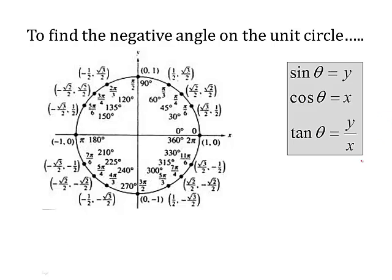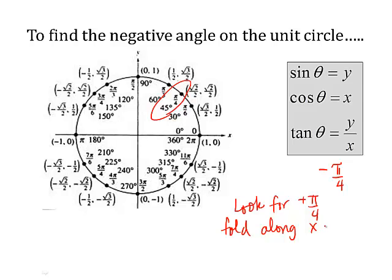If you want to find a negative angle, let's say they give me negative π over 4, what I want to do first is find the positive version of that. So I would look for a positive π over 4 angle. Where is that? That's right here. And then you fold along the x-axis. If I folded right along this x-axis, where would it land? It would land right here at 7π over 4. That angle is negative. So what that tells me is that negative π over 4 is the same as positive 7π over 4.